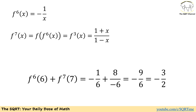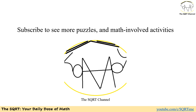For the last step, we find f₆(6) by substituting x equals 6 into f₆(x), giving negative 1 over 6. For f₇(7), we substitute x equals 7 into f₇(x) and get 8 over negative 6. Adding them together gives negative 3 over 2, and that's our final answer. Thanks for watching the video.